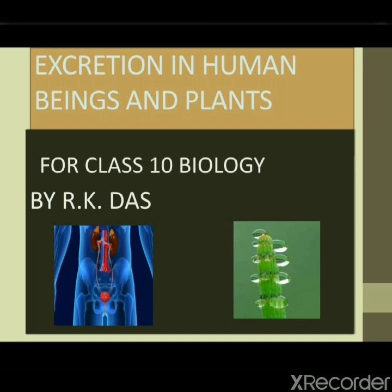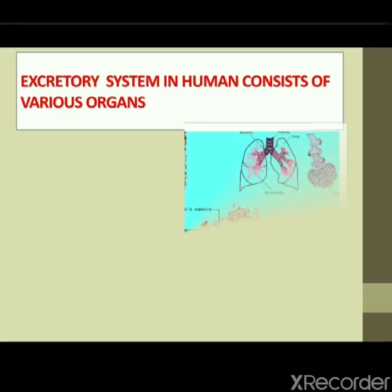Good morning children, I am RK Das. Today I am going to teach you about excretion in human beings and plants — this is the topic for Class 10 biology. Excretion is the removal of unwanted nitrogenous waste from the body. These nitrogenous wastes include urea, uric acid, and creatinine, which are removed in the form of urine. There is a basic difference between excretion and egestion: excretion is the elimination of metabolic waste, whereas egestion involves expulsion of undigested matter from the body.